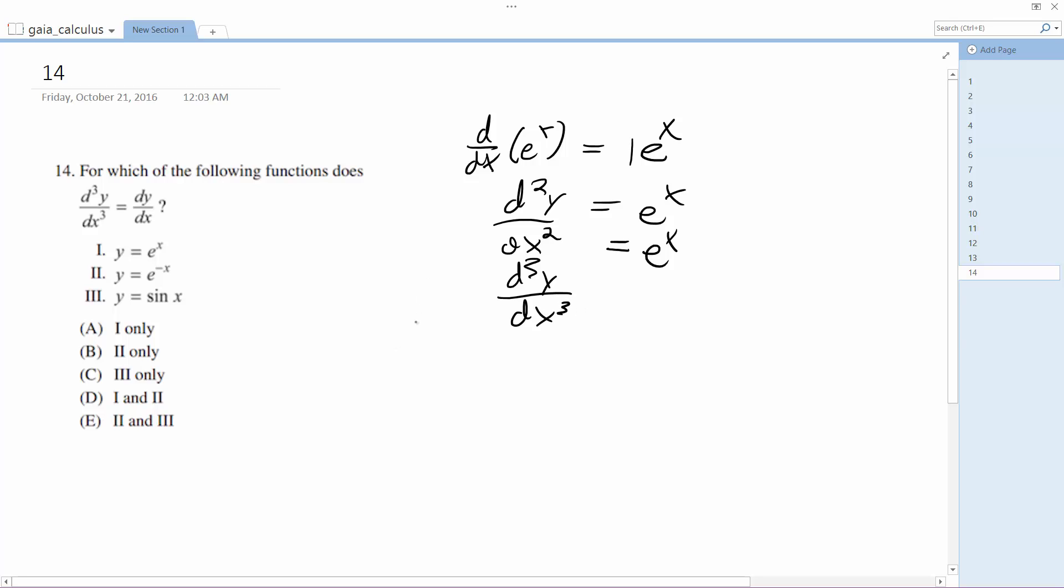Alright, and then for e to the negative x, what it is, is e to the negative x. It's only 1, but I'll do these. So it's going to be equal to negative e to the negative x.